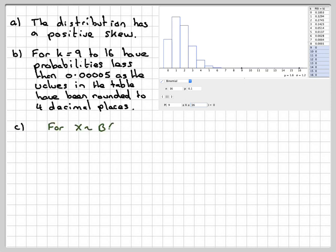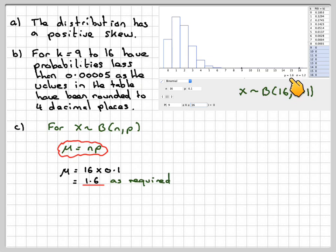For the mean, to find the mean you have to do n times p. So we've got X is binomially distributed B(16, 0.1). So using this formula here, that means we have to work out 16 times 0.1, which gives me 1.6 as in the table.